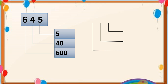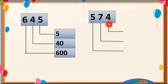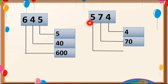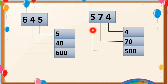Let us see one more example: 574. The place value of 4 is 4 (1's place, no zeros). The place value of 7 is 70 (10's place, one zero). The place value of 5 is 500 (100's place, two zeros). Hope this is clear to you all, students.